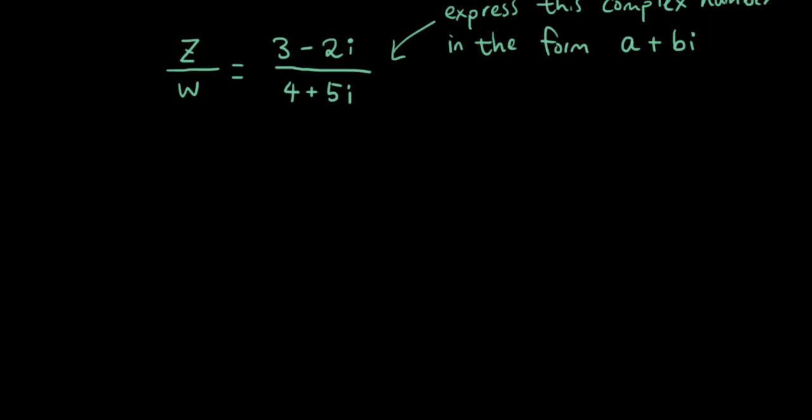So we do that by a technique that we used earlier on for surds, which is called rationalizing the denominator. So if you remember with surds, if we wanted to rationalize the denominator, what we did was we multiplied both the top and the bottom of this fraction by the conjugate of the denominator.